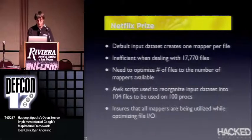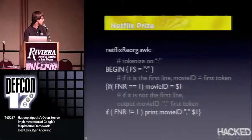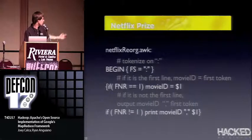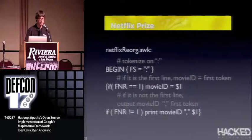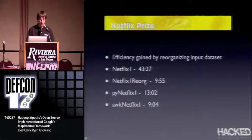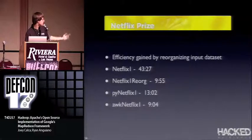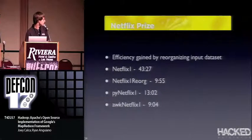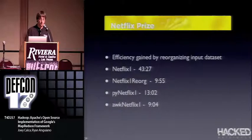Here's the reorg script we used. Since Hadoop is text-based, awk is really useful. Three lines of code reorganized our entire 17,000 files and dumped them into 100 files. The efficiency gained was dramatic: Netflix 1 took 43 minutes and 27 seconds to run with the default data set. Just by reorganizing the input, we saw a 400% increase in efficiency. Python ran faster than the original data set, and awk faster still — though Python and awk incur streaming overhead, whereas the Netflix 1 reorg was implemented in Java.